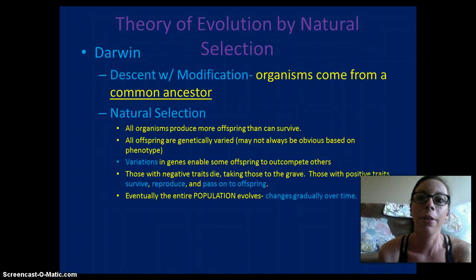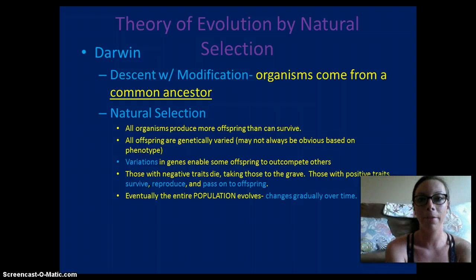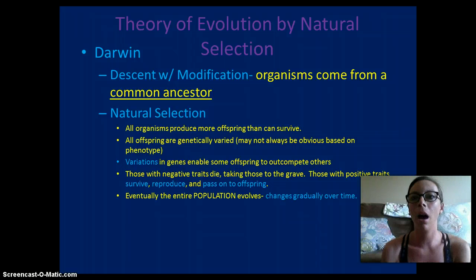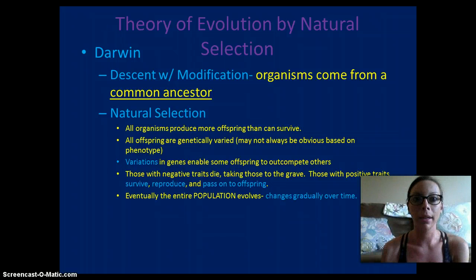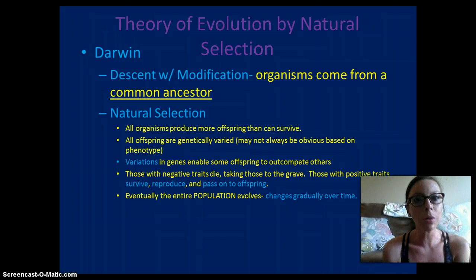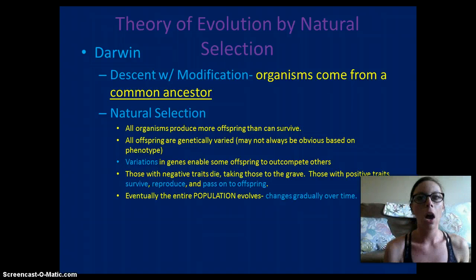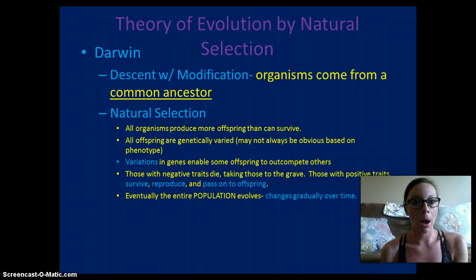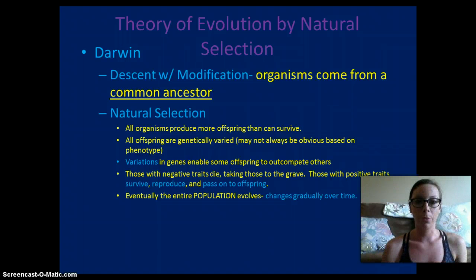However, the theory that is accepted is Darwin's descent with modification. This states that organisms come from a common ancestor. Organisms share a common ancestor, and natural selection will occur — a change of the species in their phenotype in order to survive and reproduce.